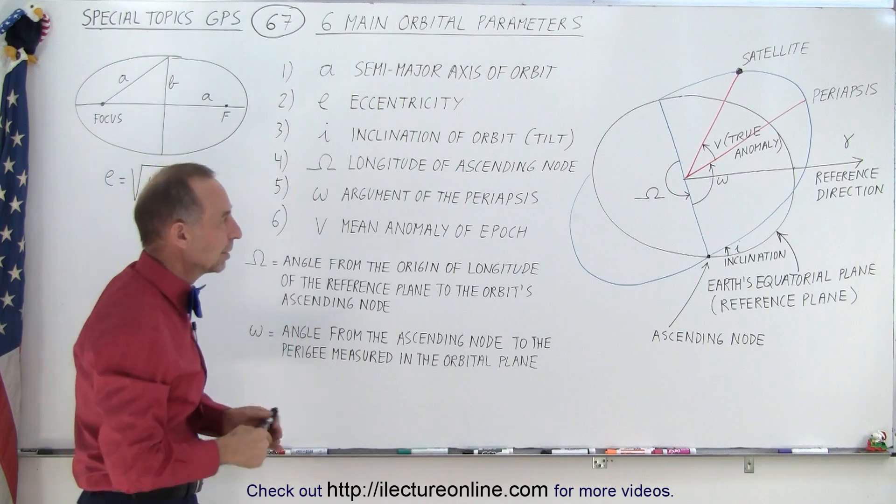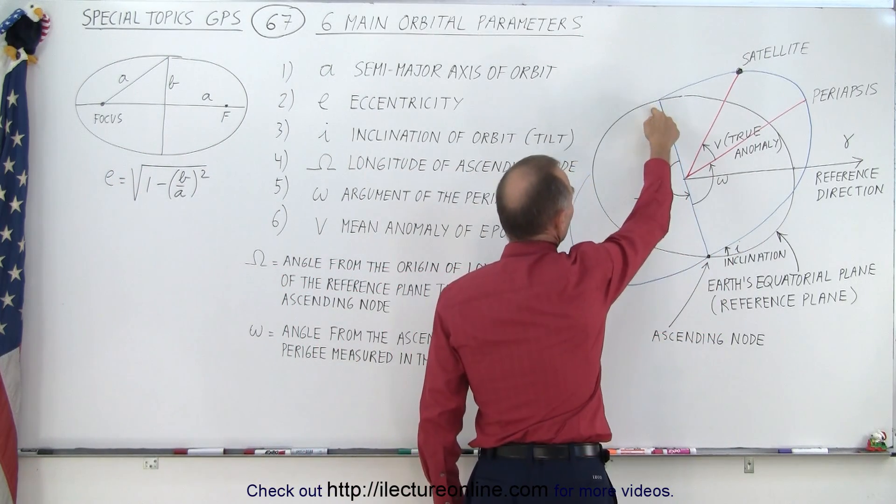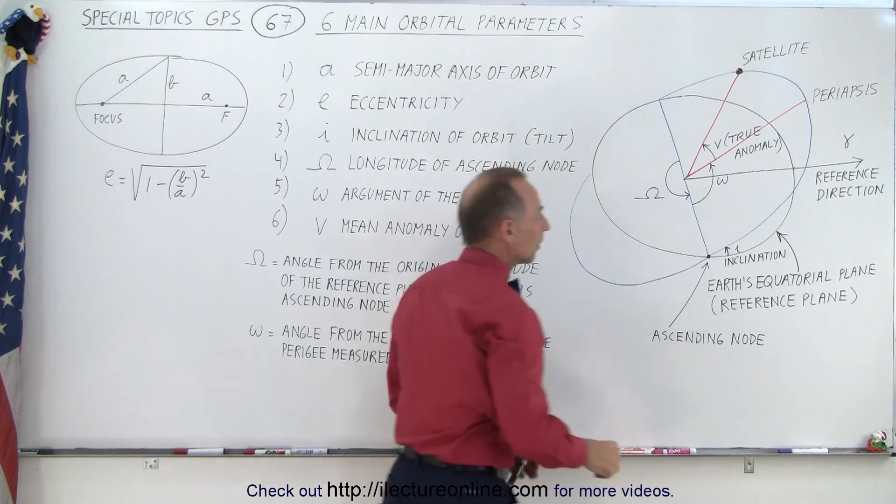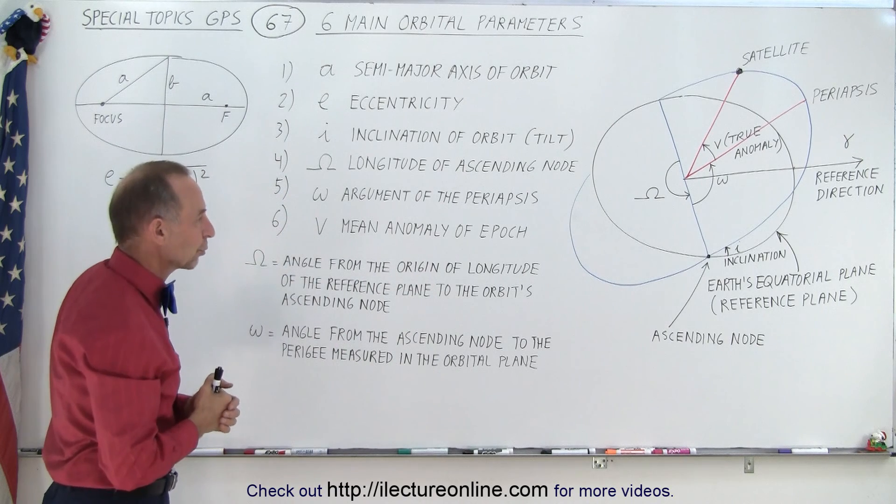any number between zero and 180, depending upon where the primary meridian is, as opposed to where the position is of the satellite when it goes through the equatorial plane.